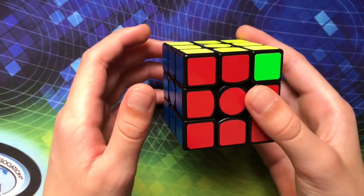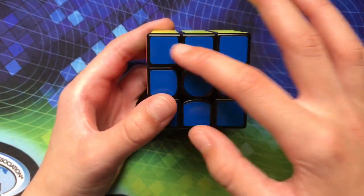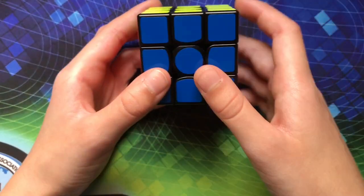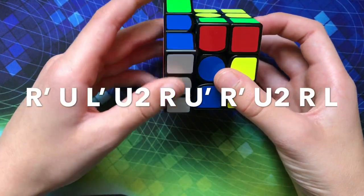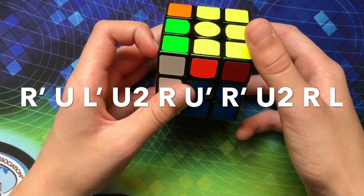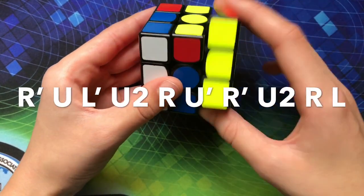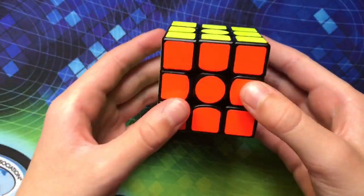Okay so let's get into the first algorithm. Okay so this first one starts with this block in the front and then you do this algorithm. You do R' U L' U2 R U' R' U2 R L. Okay so here's that algorithm quickly.